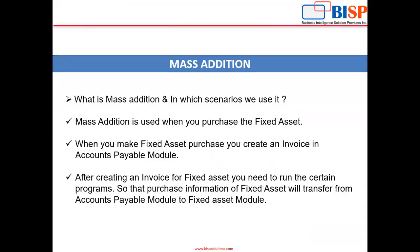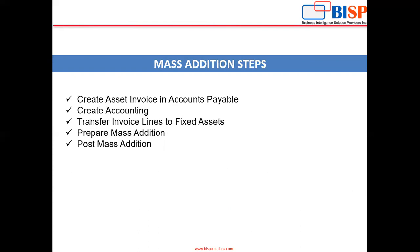What is mass addition and in which scenarios we use it? Mass addition is used when you purchase a fixed asset. When you make a fixed asset purchase, you create an invoice in the accounts payable module. After creating an invoice for the fixed asset, you need to run a certain program so that the purchase information of the fixed asset will transfer from the accounts payable module to the fixed asset module.